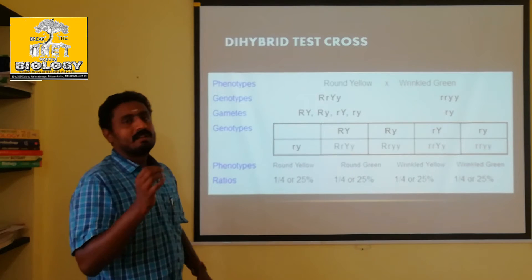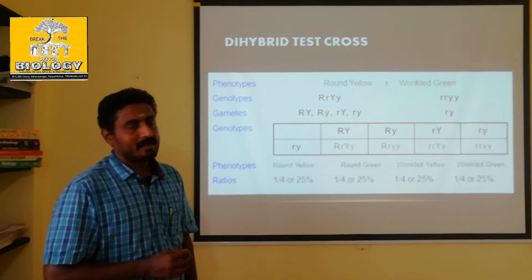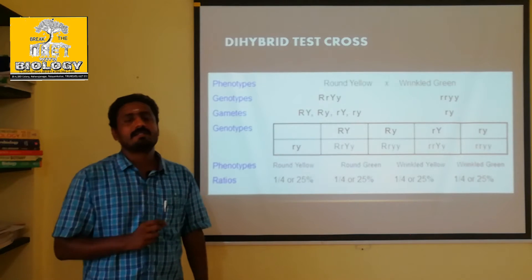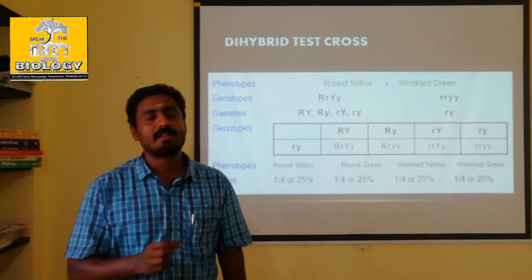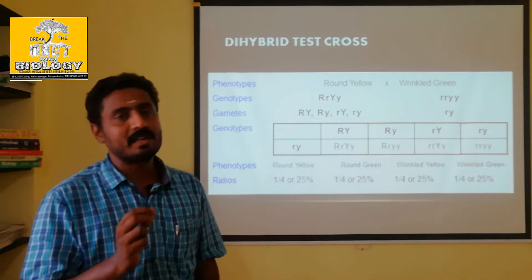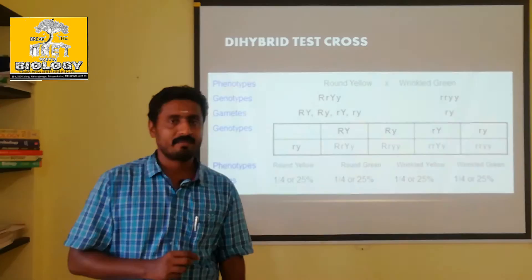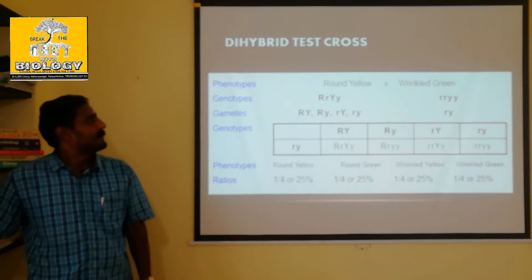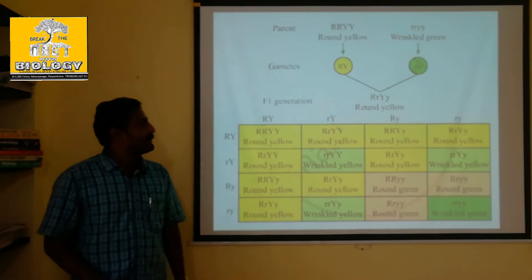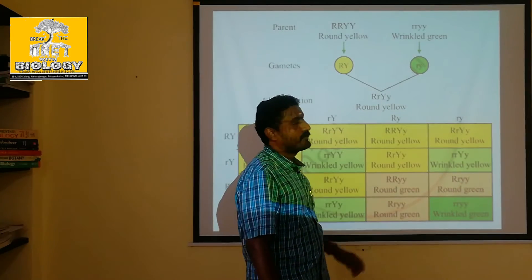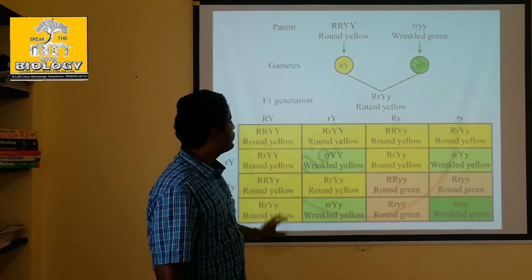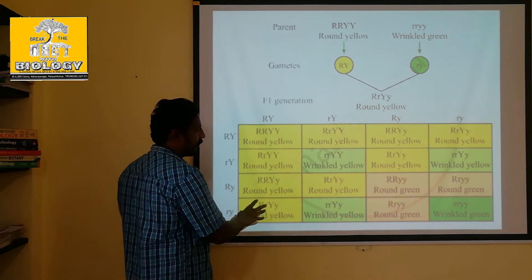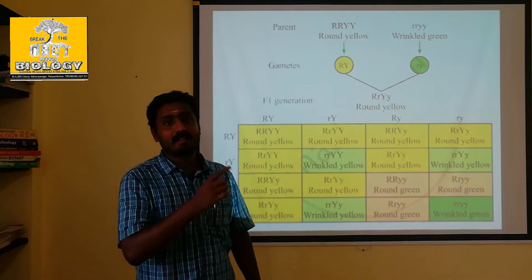Now let's look at two characters simultaneously. What are the characters? It is round yellow — seed shape and color. Round yellow is the same character. The individual is a round yellow form, and in the round yellow, one body individual is a dihybrid cross.